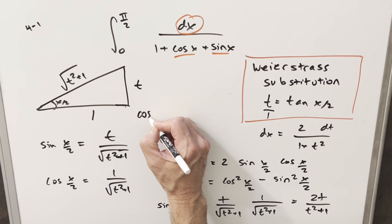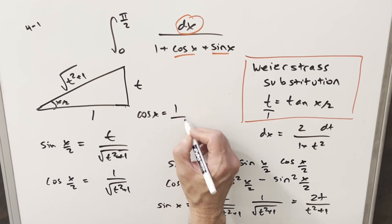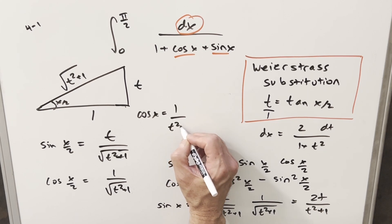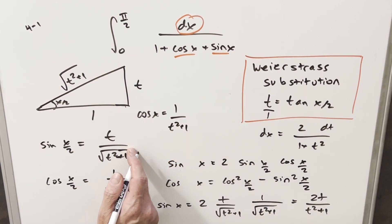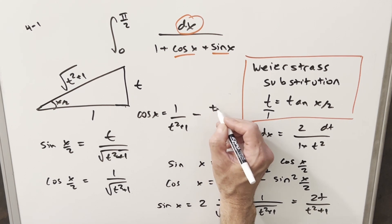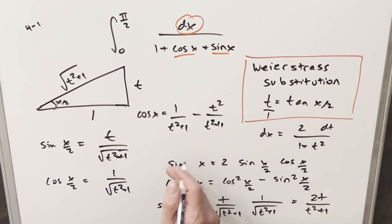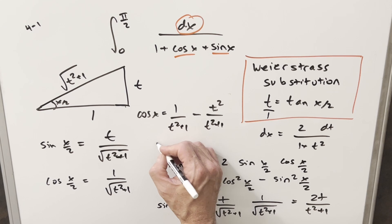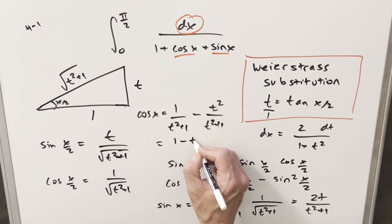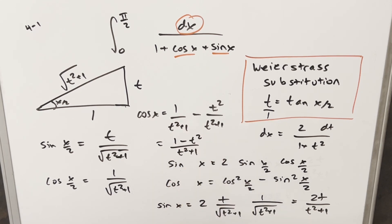Using the space over here to calculate cosine: cosine squared of x/2 is one over t squared plus one, and sine squared of x/2 is t squared over t squared plus one. Subtracting these with a common denominator gives cosine x equals one minus t squared over t squared plus one.